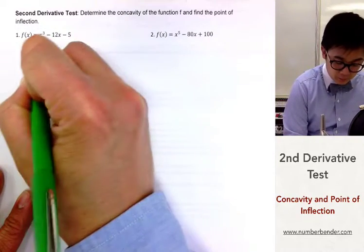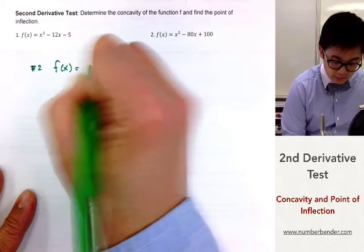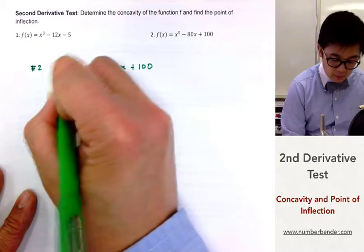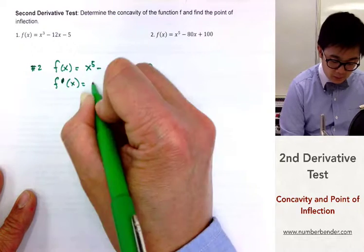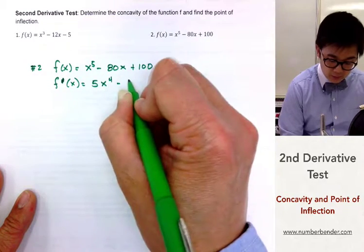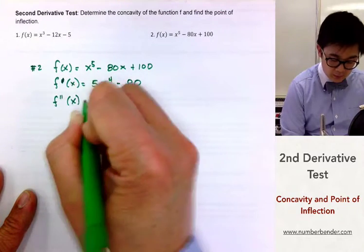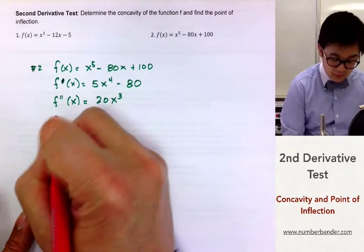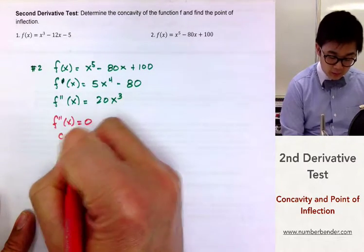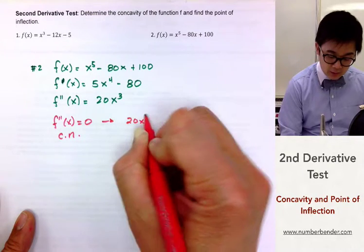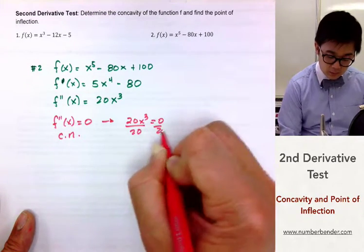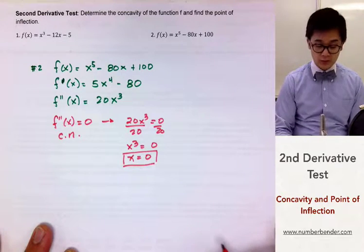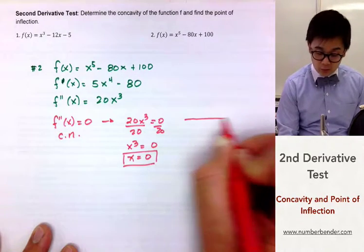For problem number two, f prime of x is 5x to the fourth minus 80, and f double prime of x is equal to 20x cubed. From our second derivative we set it equal to 0 to find the critical number: 20x cubed equals 0 gives us x equal to 0. This is the critical number we will use in our sign chart.